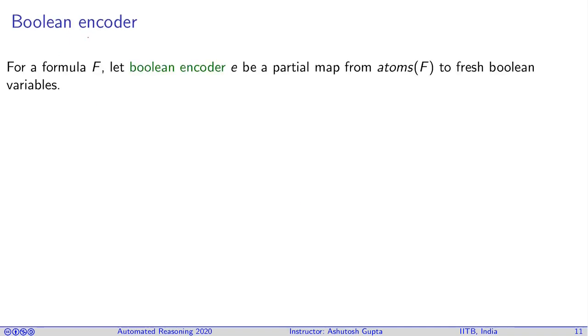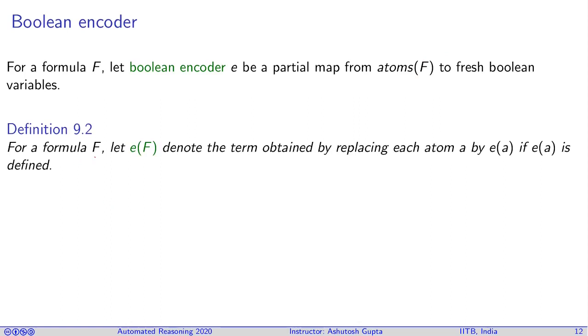Let's look at Boolean encoder. Since in CDCL(T) we can separate the concerns between Boolean reasoning and theory reasoning, when a formula is given to us, we need to turn it into two parts: one relevant to theories, one related to Boolean reasoning. Boolean encoder provides that interface that separates the concern. The Boolean encoder is a map that maps the set of atoms appearing in formula F to fresh Boolean variables. For a formula F, let E(F) denote the term obtained by replacing each atom A by E(A).